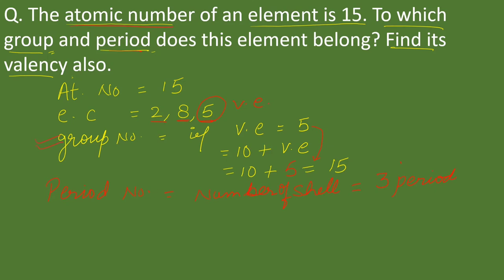This is the element of third period. It means with the help of atomic number we can easily determine its group number and period number. While writing the answer, you need to explain how you calculate the group number and period number. This tells the position of the element in the periodic table.